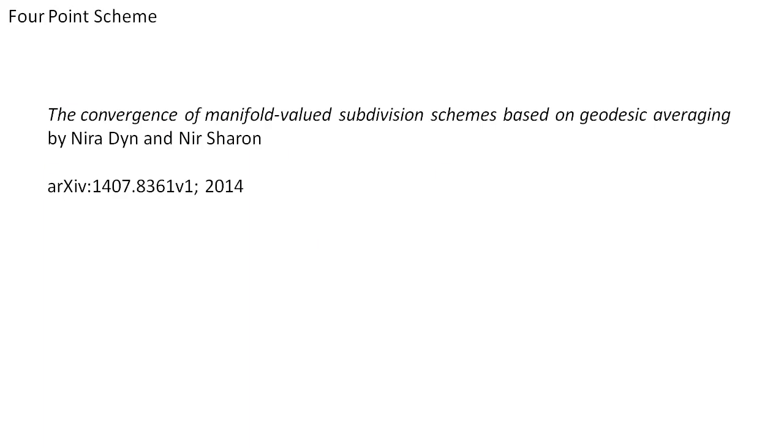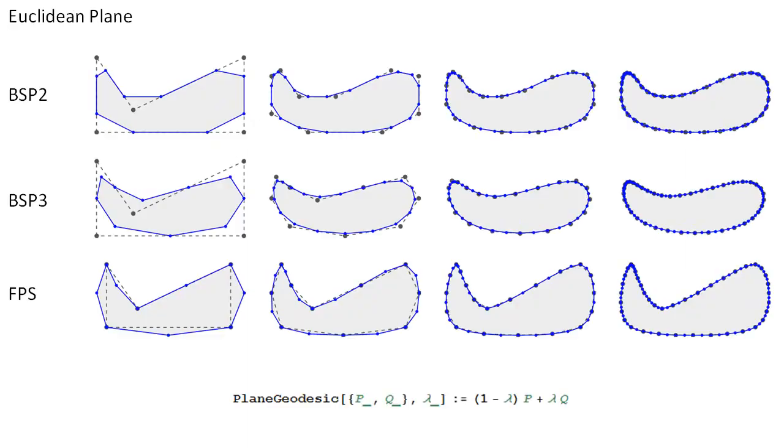For the four-point scheme, please refer to the recent paper by Din and Charon. Curve subdivision was initially conceived for polygons in the Euclidean plane, where geodesic is parameterized by the affine linear combination of two points.